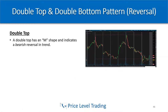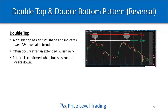Next, double top and double bottom patterns — also reversal patterns. A double top has an M shape and indicates a bearish reversal in the trend. It often occurs after an extended bullish rally where there's a lack of buyers to keep pushing price higher. This pattern is confirmed when bullish structure breaks down. You don't want to step in front of a train when shorting a double top — wait for price to reject and then break through support, then short the retest to ride the momentum down. On the stock NTRS over about five days, price made a high, got back up there, couldn't push higher, then broke down through support — that's our entry on strong volume, stop above the high.